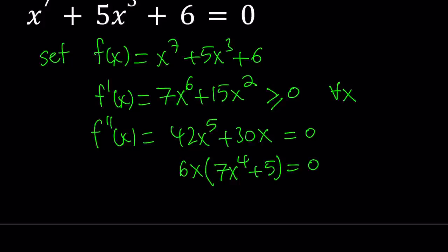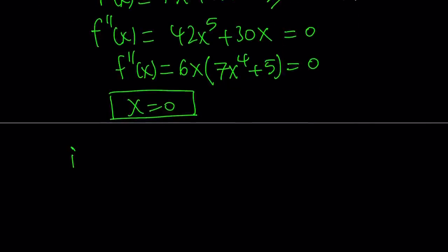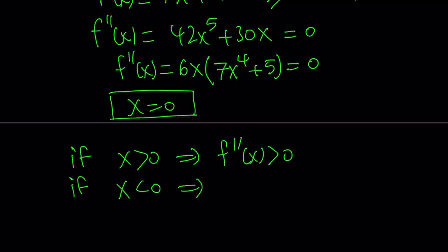From here, we only get one solution. A root of the second derivative is going to be x equals 0. And if you look at this closely, for example, if x is positive, then the second derivative is going to be positive. And if x is negative, then the second derivative is going to be negative. What is that supposed to mean? We have an inflection point.